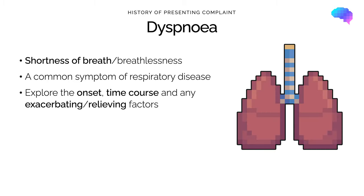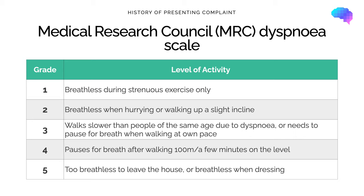Let's look at our first key respiratory symptom: dyspnea, meaning shortness of breath or breathlessness. It's important to explore the onset, time course, and exacerbating and relieving factors. One way to assess severity is the Medical Research Council Dyspnea Scale, which assesses functional limitation. There are five grades, ranging from grade one — breathless only during strenuous exercise — to grade five, where the patient is too breathless to leave the house or breathless even when dressing.